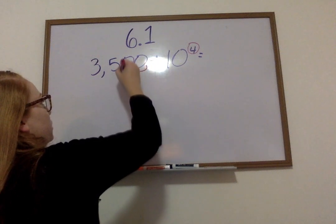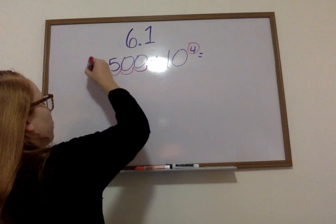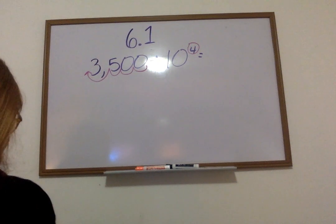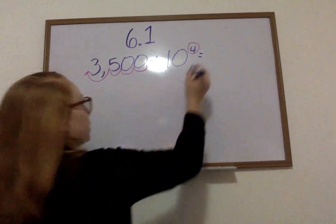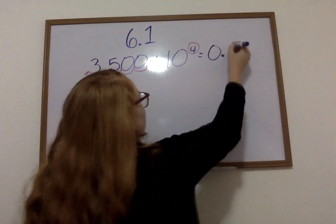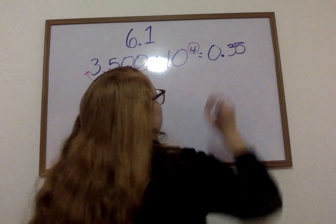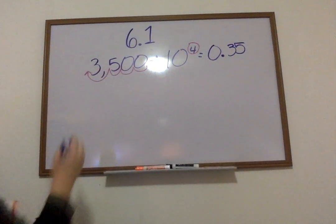It's going to move four places forward. One, two, three, four. Four hops forward. So, my answer is going to end up being 0 and 35 hundredths. Next question.